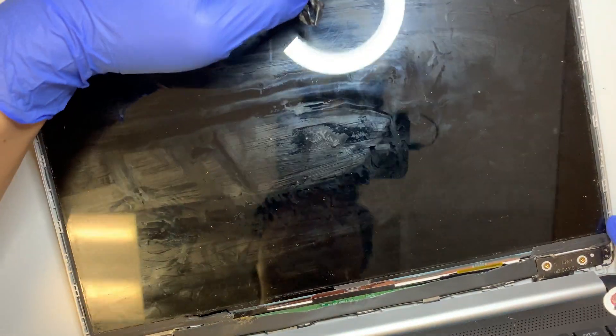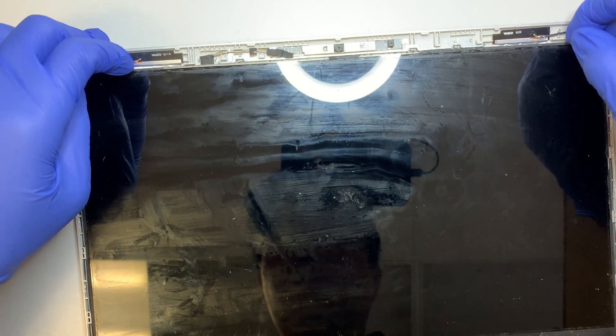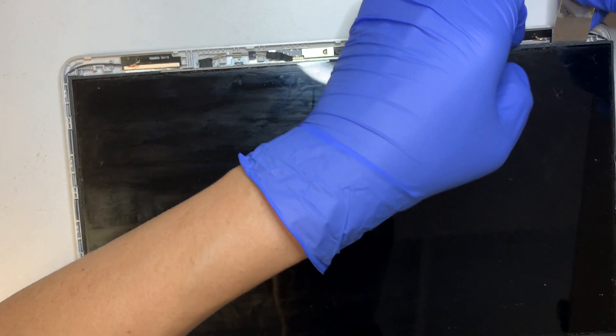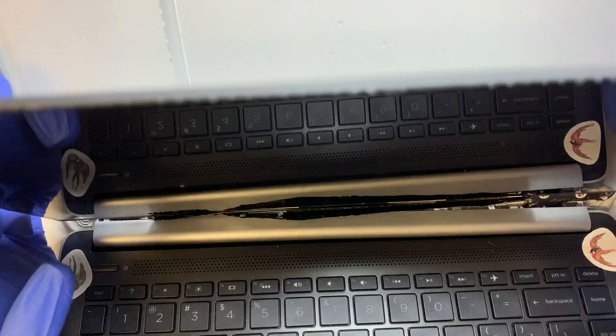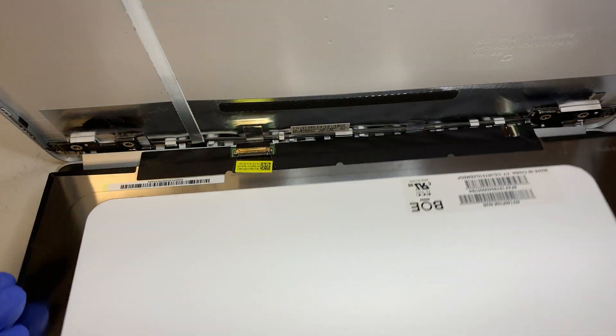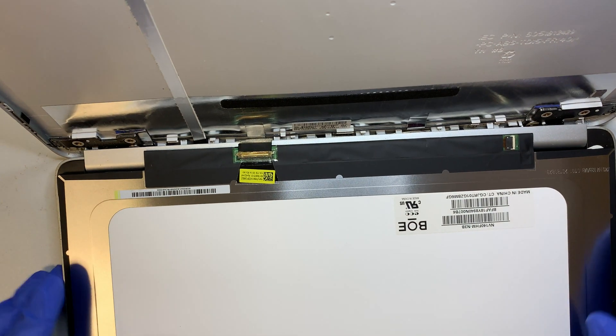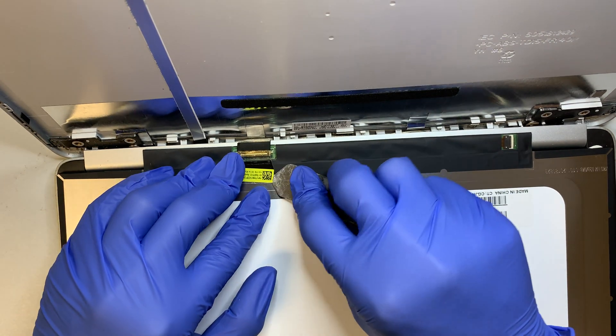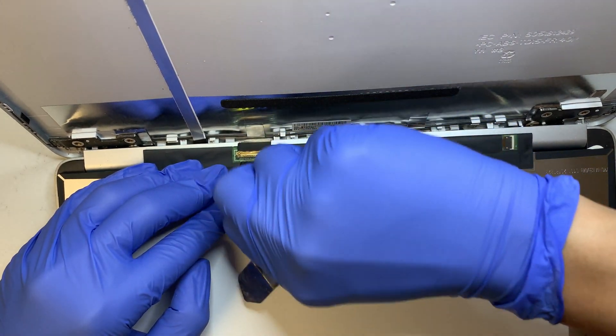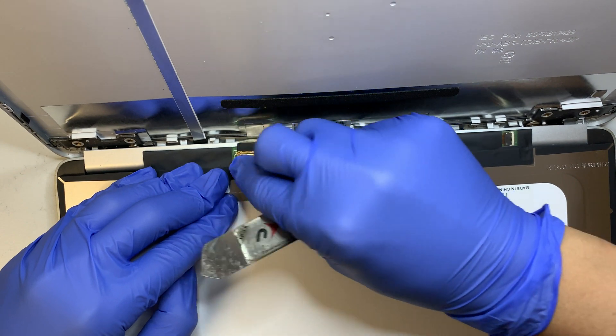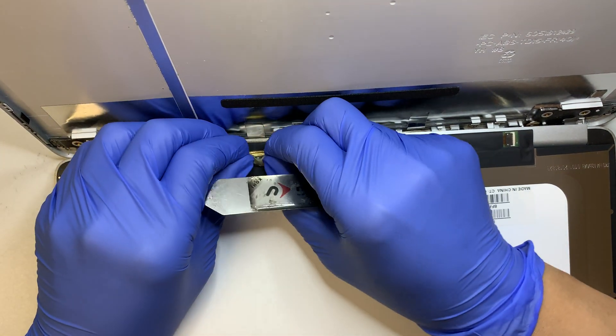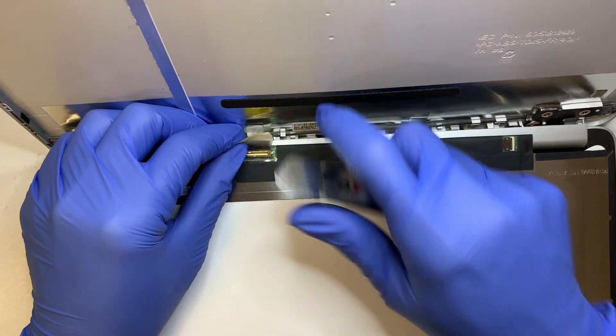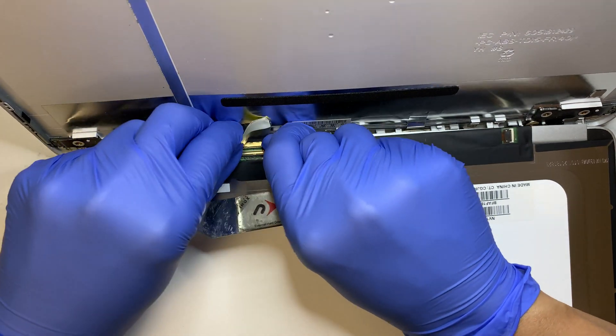Once you have that thing removed, it should be quite easy where the screen will just come right out. At this point here this is where the connector is, and the connector does have this little plastic that is holding on the cable. So go ahead and slowly and gently separate the cable away from the LCD.